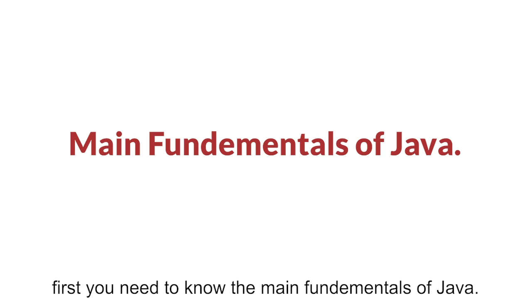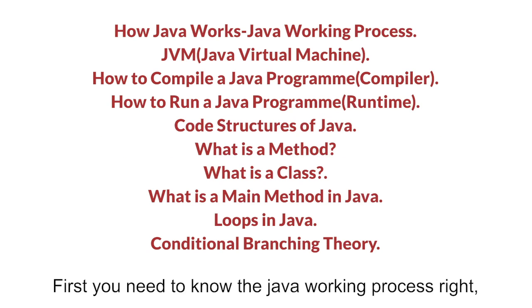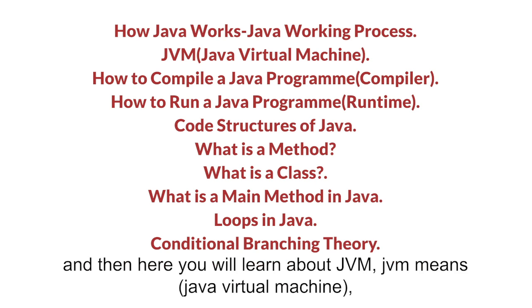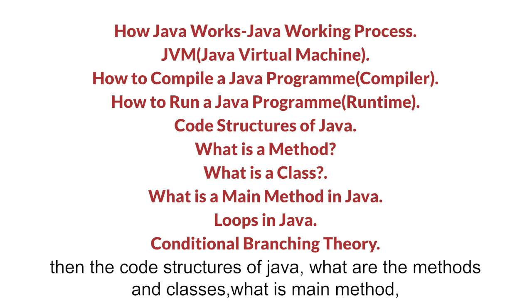To become a Java programmer or engineer, first you need to know the main fundamentals of Java. You need to know the Java working process — how Java works — and you will learn about the JVM, or Java Virtual Machine, and how a Java program compiles and how it runs.